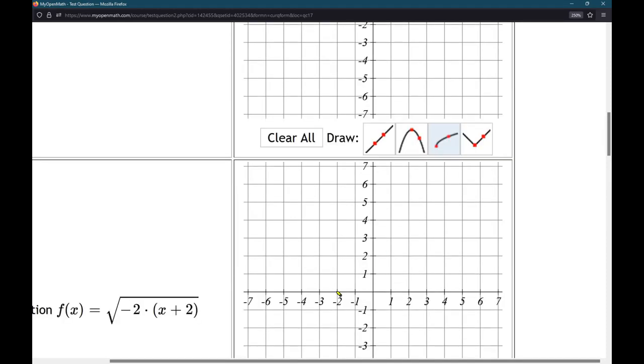So, our first point is here at negative 2, 0. And then, we're at negative 4, 1. There we go.